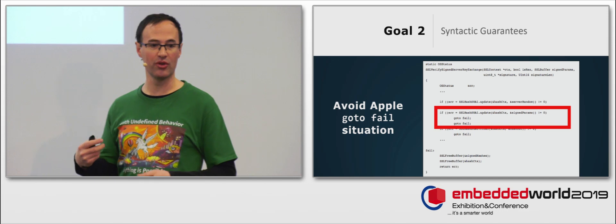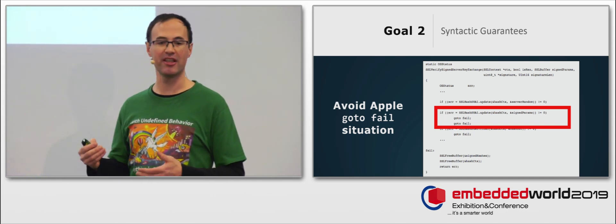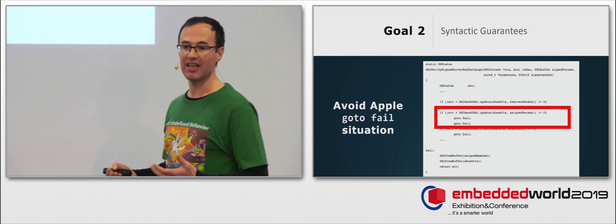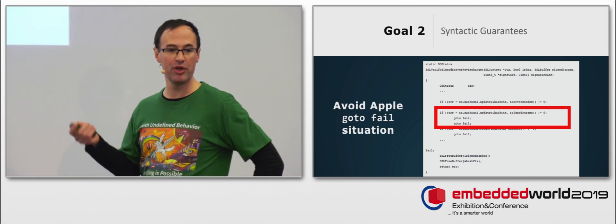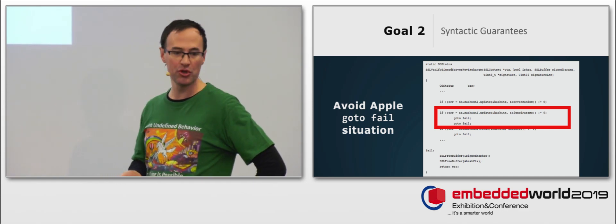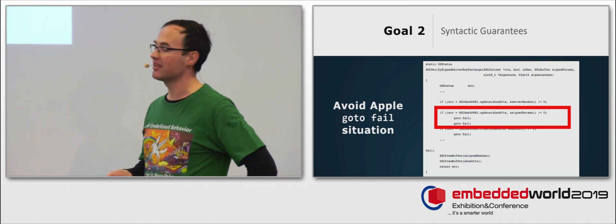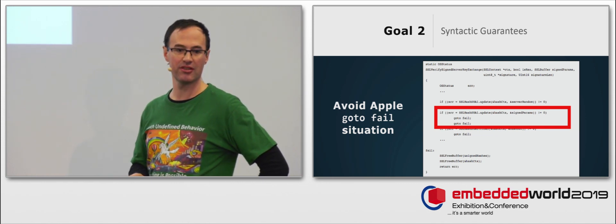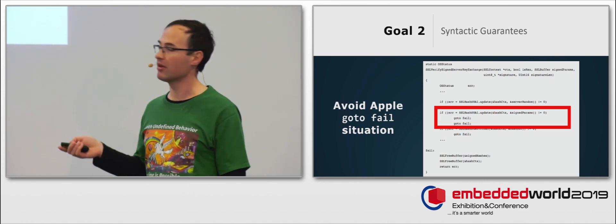Still, at a basic level, MISRA C rules aim at ensuring syntactic guarantees. That would allow to prevent the kind of bugs that were famous here, the goto fail bug that, in 2014, impacted the security of SSL TLS from Apple. Well, respecting the MISRA C subset would have prevented this bug.